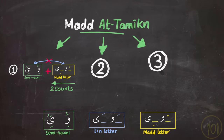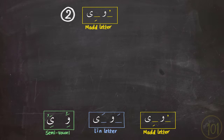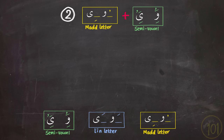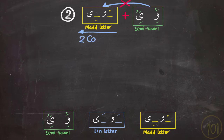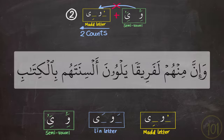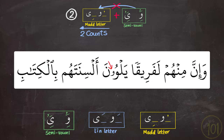The second case is if the مد letter was preceded by a semi-vowel of the same kind. Again, this might cause the two letters to be fused, and مد التمكين prevents that from happening. Like in this example — here we see the وو is represented by the symbol of وو, and before it we see a semi-vowel وو with ضم. So we say يلوون, by pronouncing two وو's one after the other.